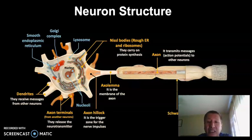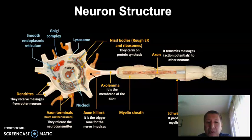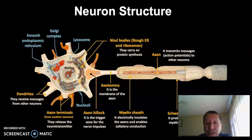The Schwann cell is the cell that produces the myelin sheath in the peripheral nervous system. Remember, in the central nervous system, the oligodendrocytes are the ones that produce the myelin sheath. The myelin sheath is going to insulate the axon to allow the action potential to be transferred through the axon.